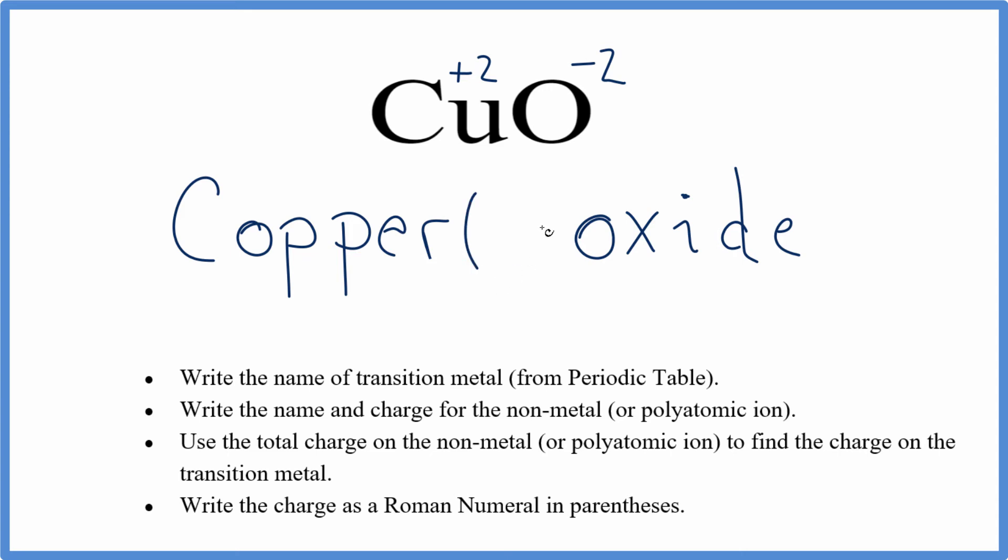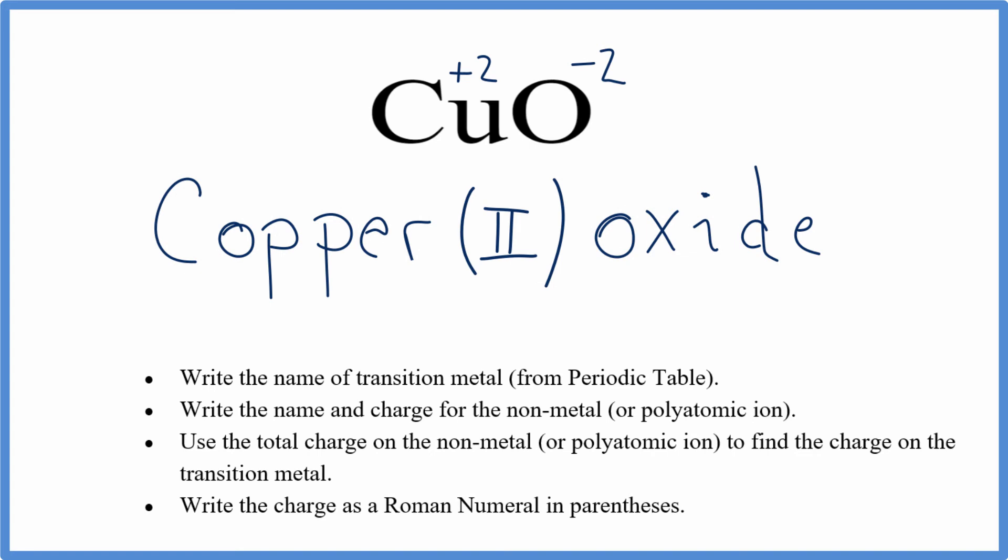we put parentheses, and we write the Roman numeral, 2. That makes the formula for CuO, copper II oxide.